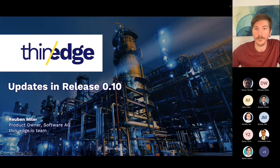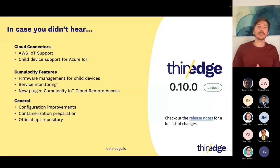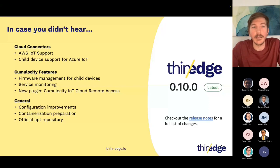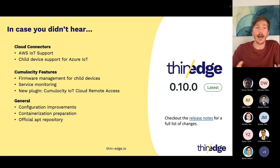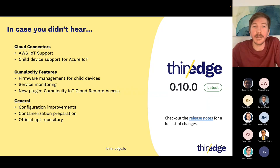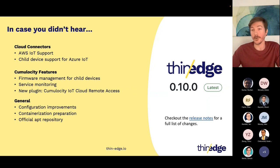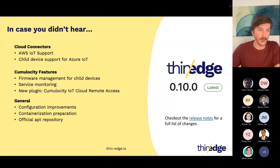Starting with the main features: additions to our cloud connectors that we now support. We've added AWS IoT support, which is a great addition alongside the existing Azure and Cumulocity support. So continuing the journey of being cloud agnostic. We also had a great contribution by an external contributor to add child device support for Azure IoT, which is great to see — everyone getting more involved and contributing to the project directly, which enables us to scale out in the future.